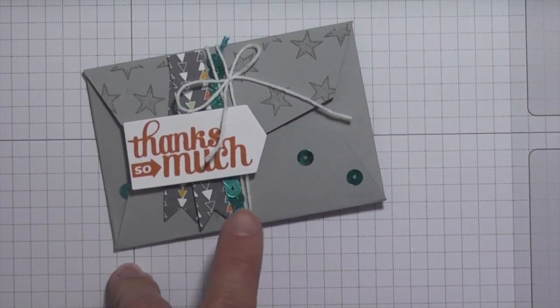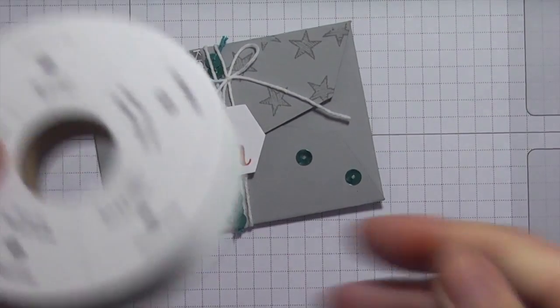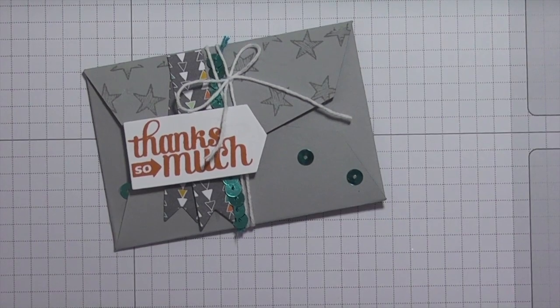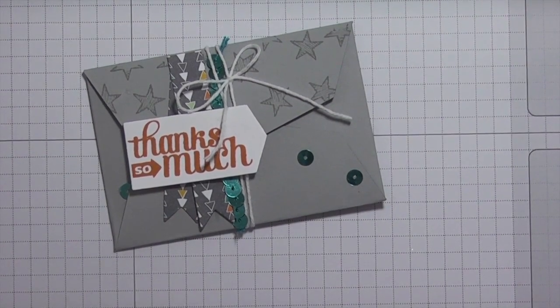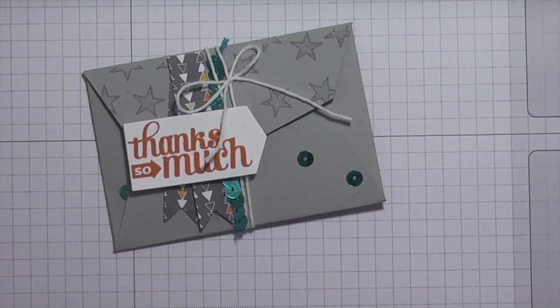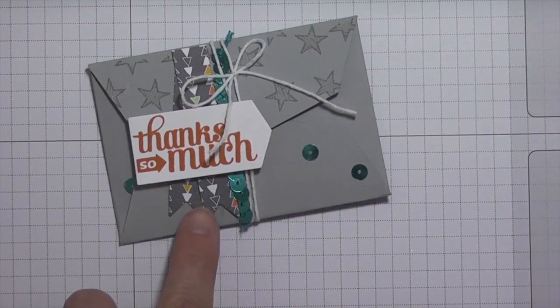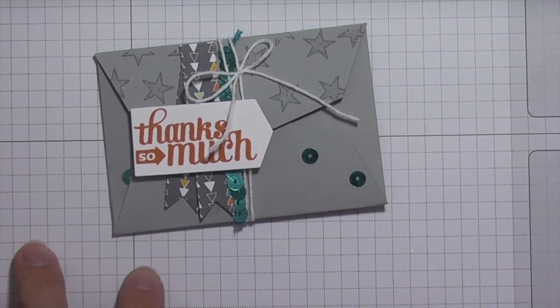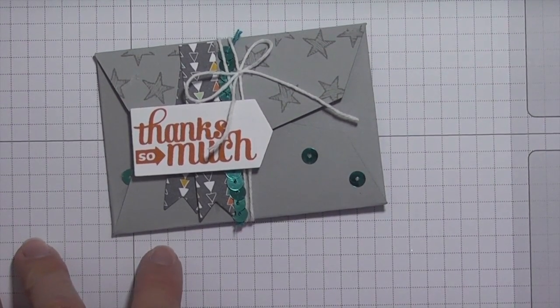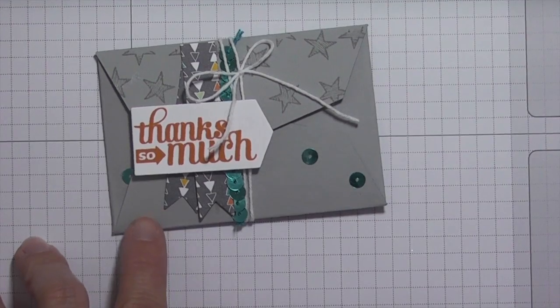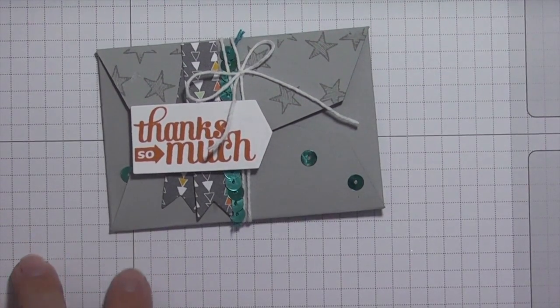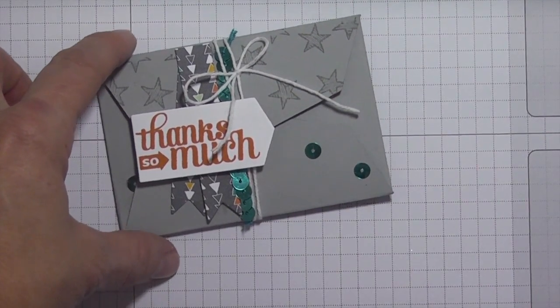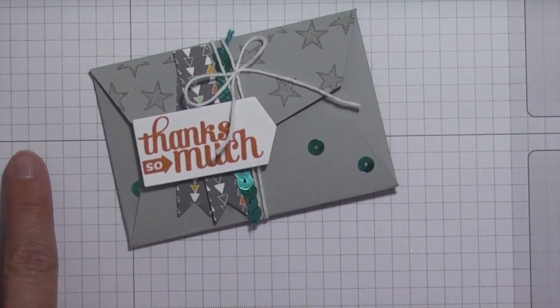I'm going to be using the Bermuda Bay sequin trim, which is also in our occasions catalog. Then this designer series paper is in our annual catalog, the confetti celebration designer series papers. And then the gift card envelope and trims thinlit dies. This was originally in our holiday catalog that carried over to occasions. If you didn't get it during the holiday, you can still pick it up now.